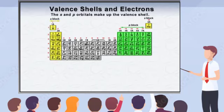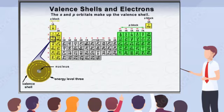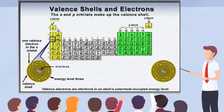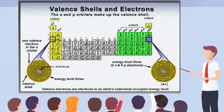The S and P orbitals make up what is known as an element's valence shell, and contain what are known as valence electrons. Valence electrons are those that exist in an atom's highest occupied energy level. Moving from left to right in the periodic table, as energy levels fill, more and more electrons are added to the valence shell until two electrons fill the S orbital and six electrons fill the P orbitals. This is the case with the noble gases in group 8A.